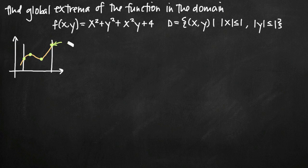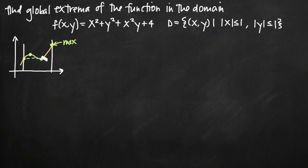For example, the highest value the function attains in the interval would be the global maximum. And if one of the critical points was lower than the other, we would identify that as the global minimum. If two points had the same y value when plugged into the original function, we would say the two of them together constituted local minimums, because there was no global minimum where one value was less than the other.